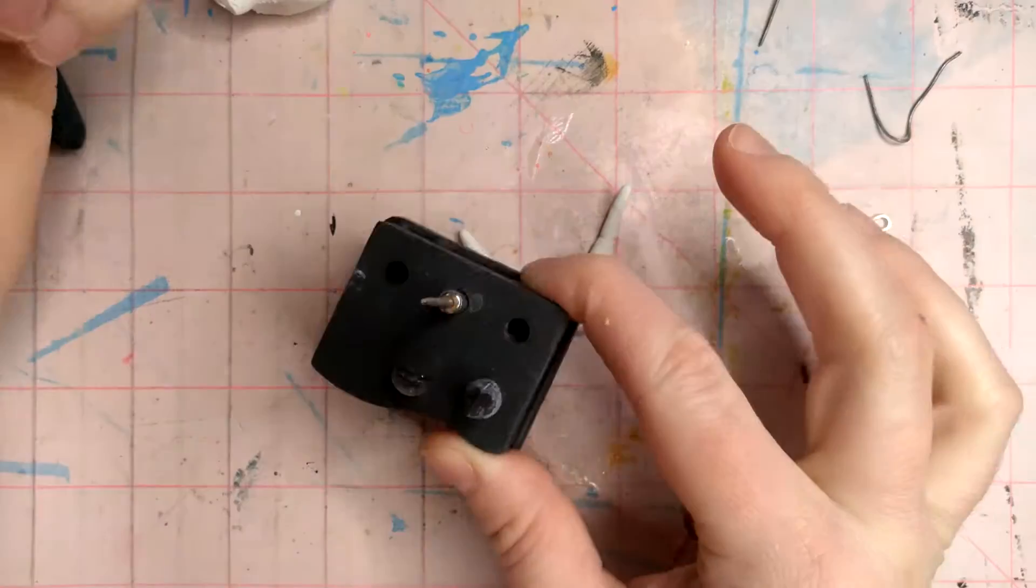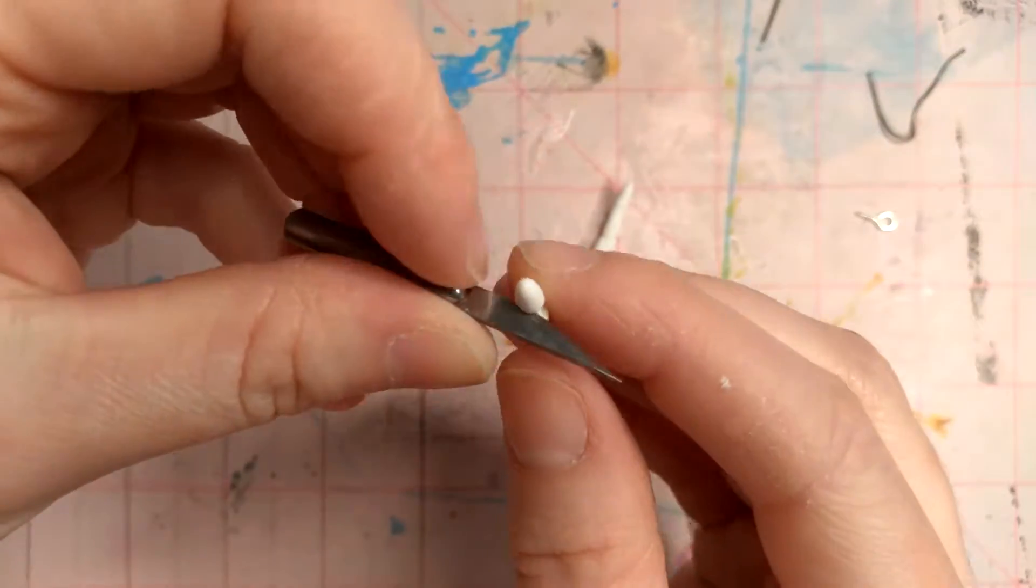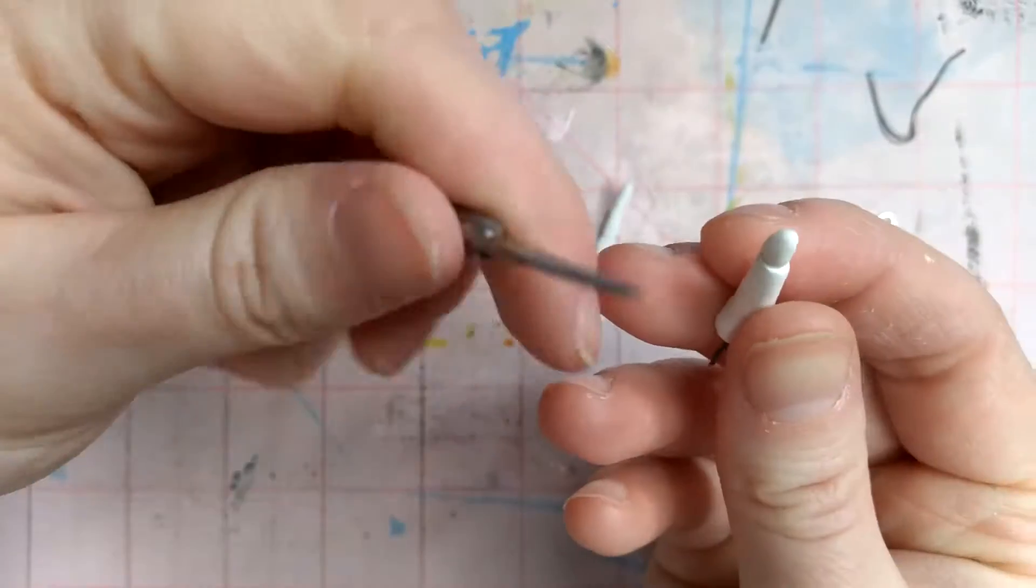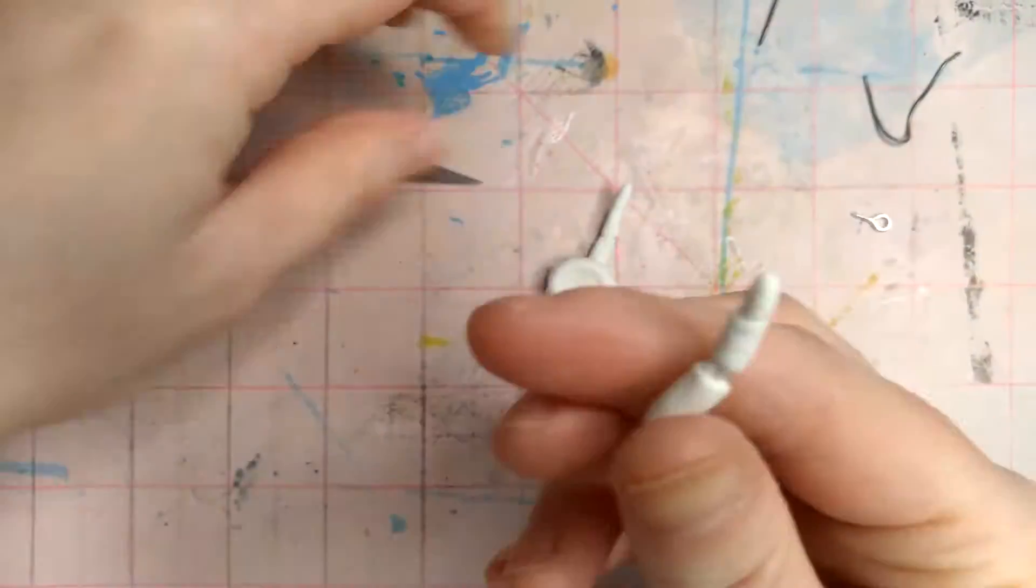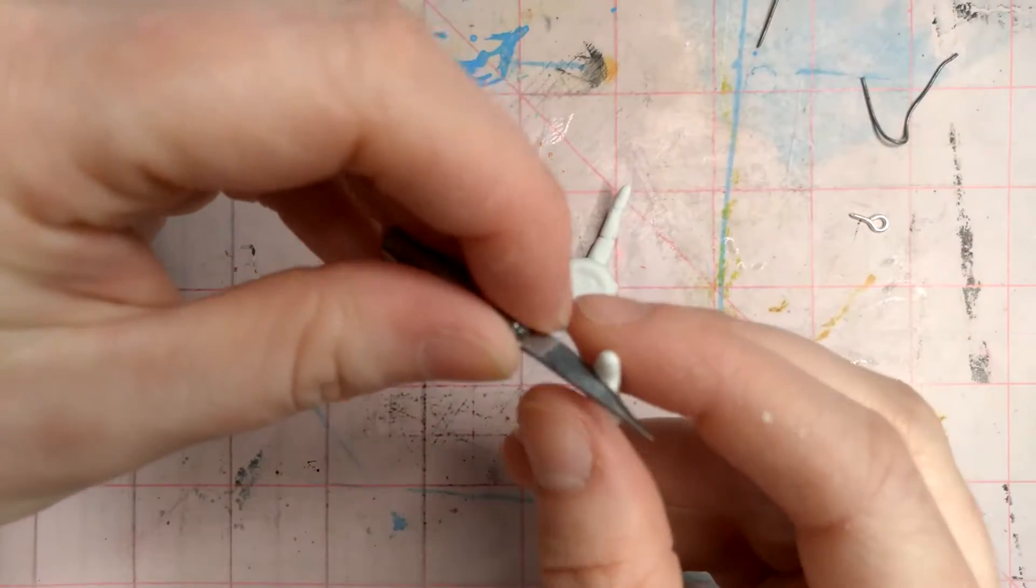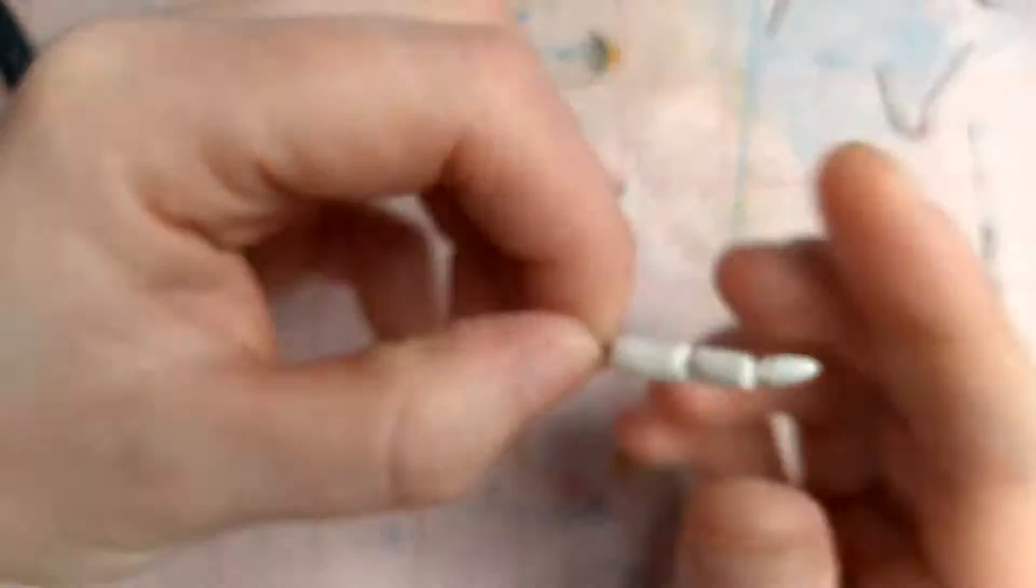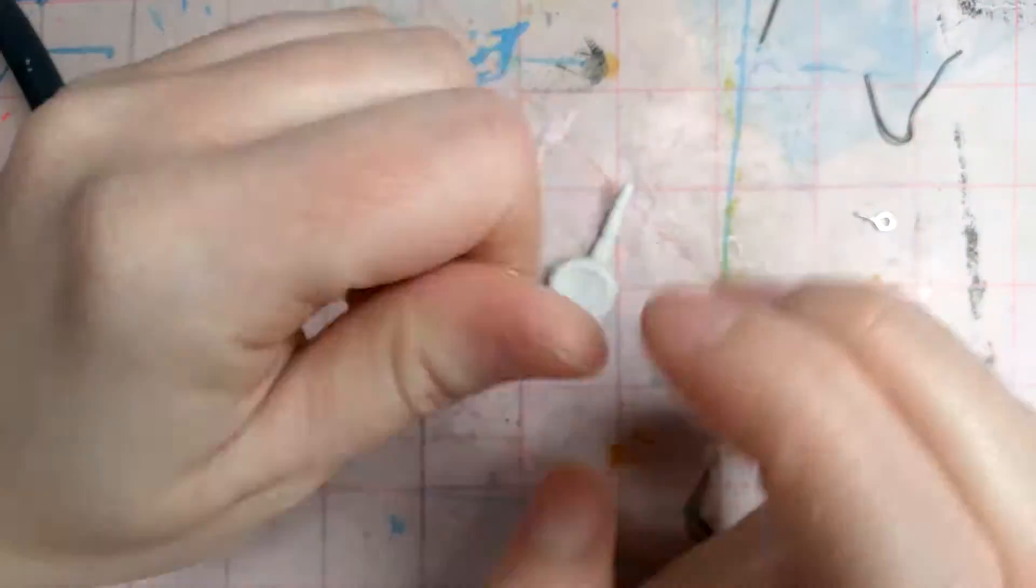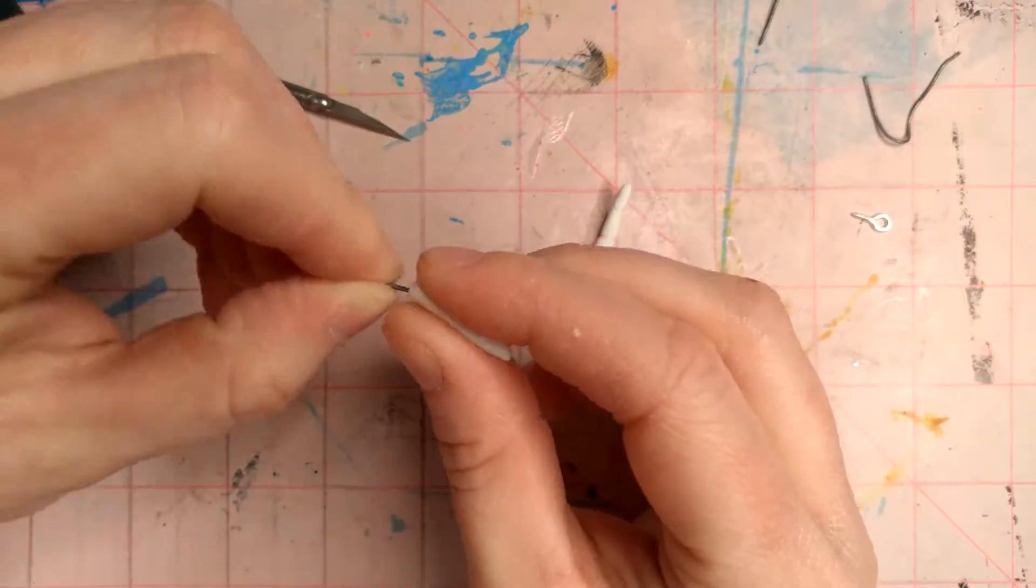So currently we are actually making the hands. You get to see how I make each individual finger. I just use the different clay tools and the actual pieces because I don't want to use the whole handle. Sometimes it's just easier to take the little piece and use that.